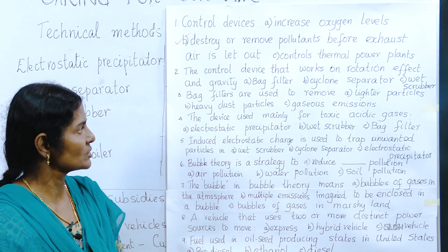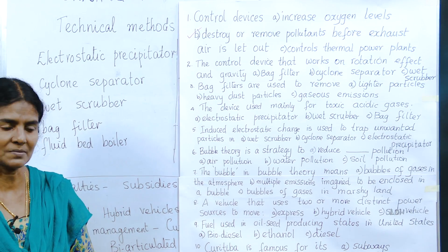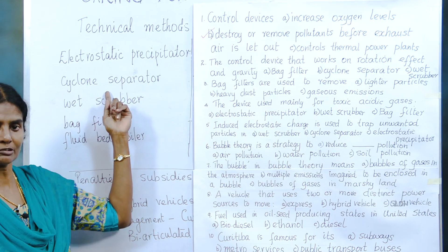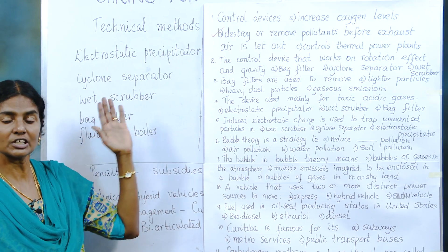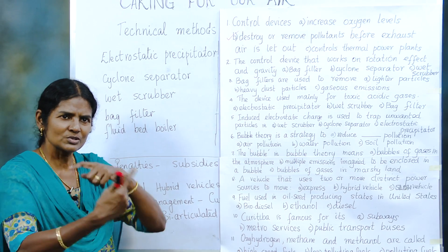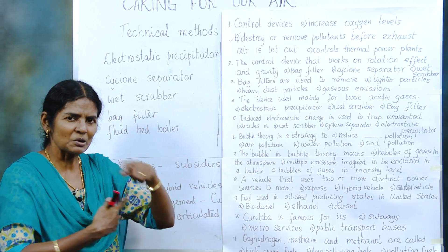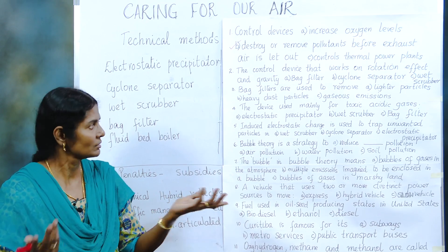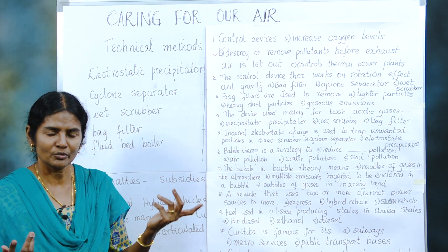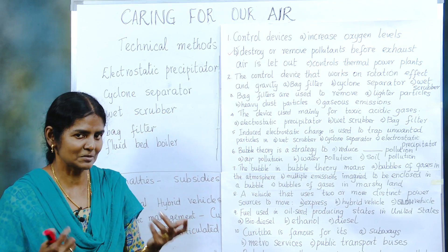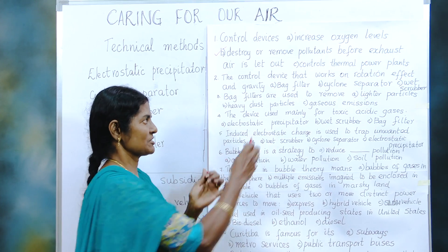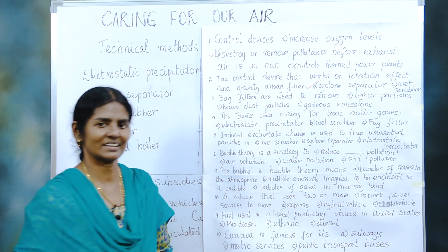The control device that works on rotation effect and gravity — which one keeps rotating? Will a filter rotate? No. A wet scrubber only scrubs, it does not rotate. So the cyclone separator is the correct answer.